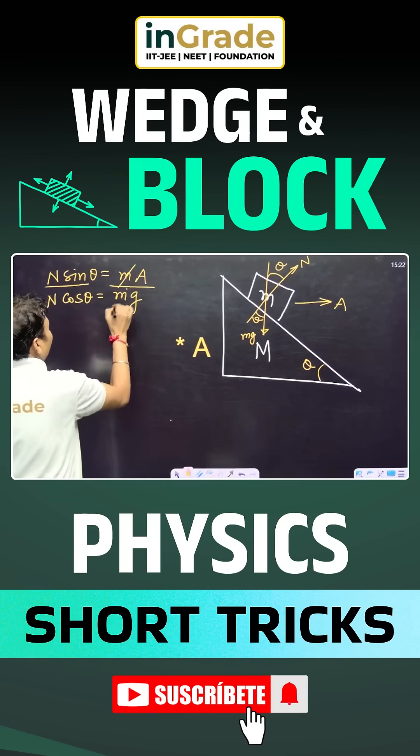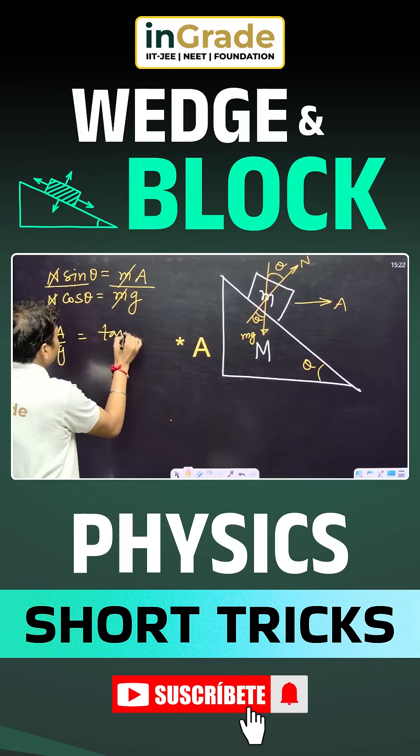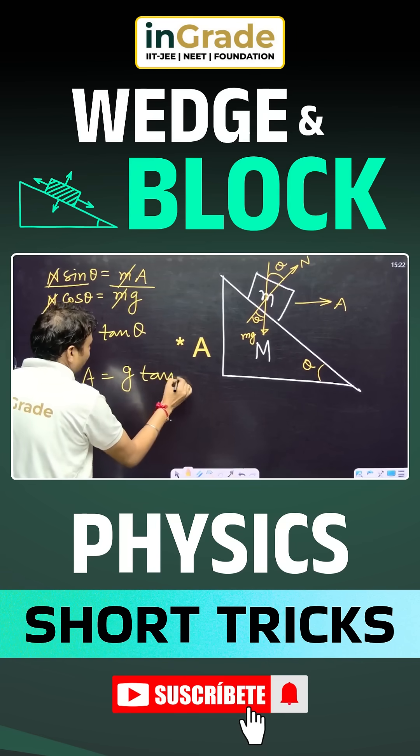If we divide these two, m and m getting cancelled out, a by g, n and n getting cancelled out, a by g is equal to tan theta. So the acceleration should be given by g tan theta.